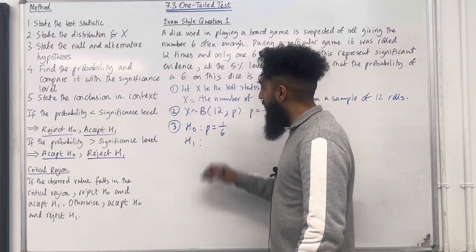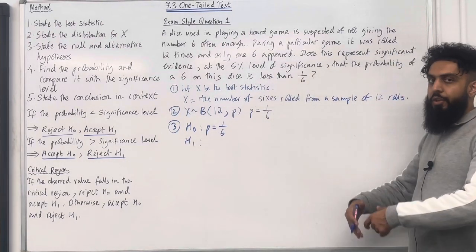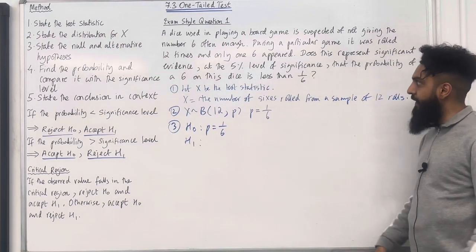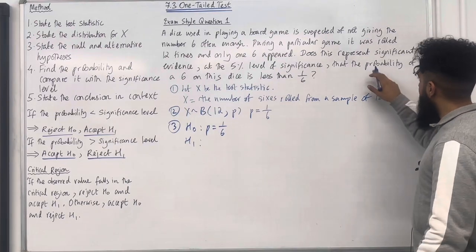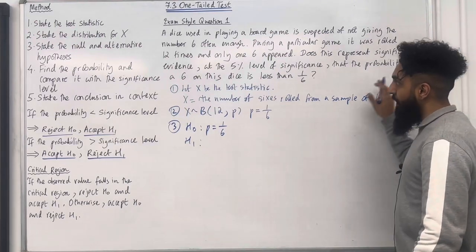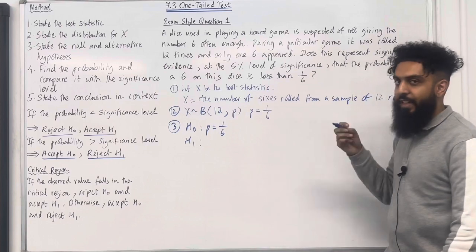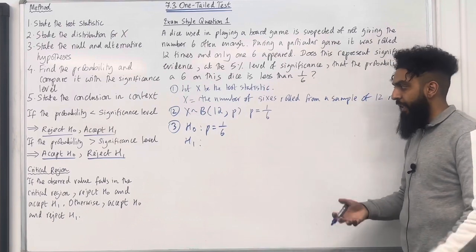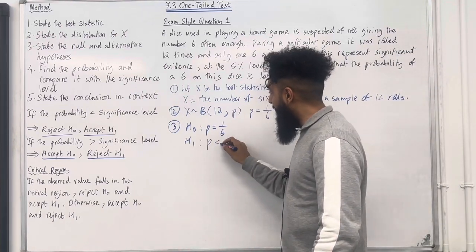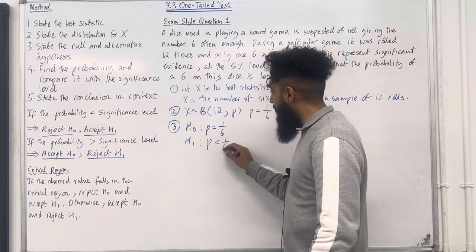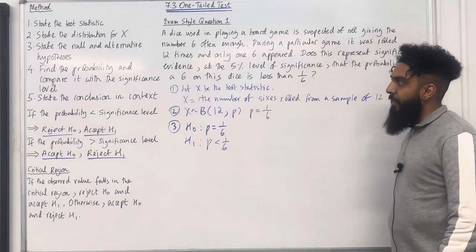Step 3: we have to state the null and alternative hypothesis. The null hypothesis H0 is what we assume to be correct — we're assuming that the probability P of getting a 6 is 1 over 6. H1 is the alternative hypothesis, what we are trying to test. We are testing if the probability of getting a 6 is less than 1 over 6, so in H1, P is less than 1 over 6.